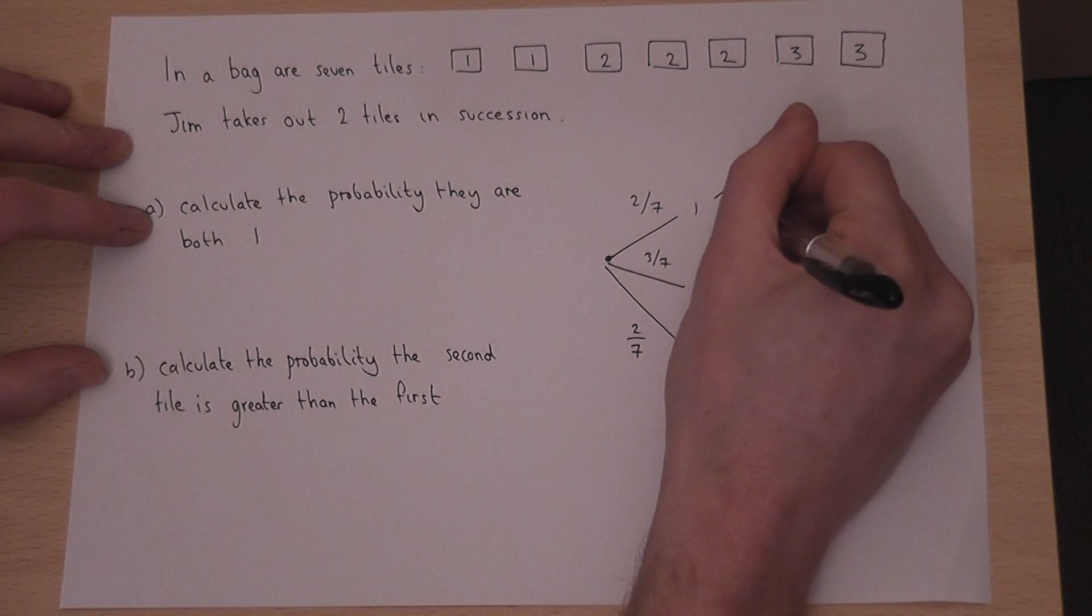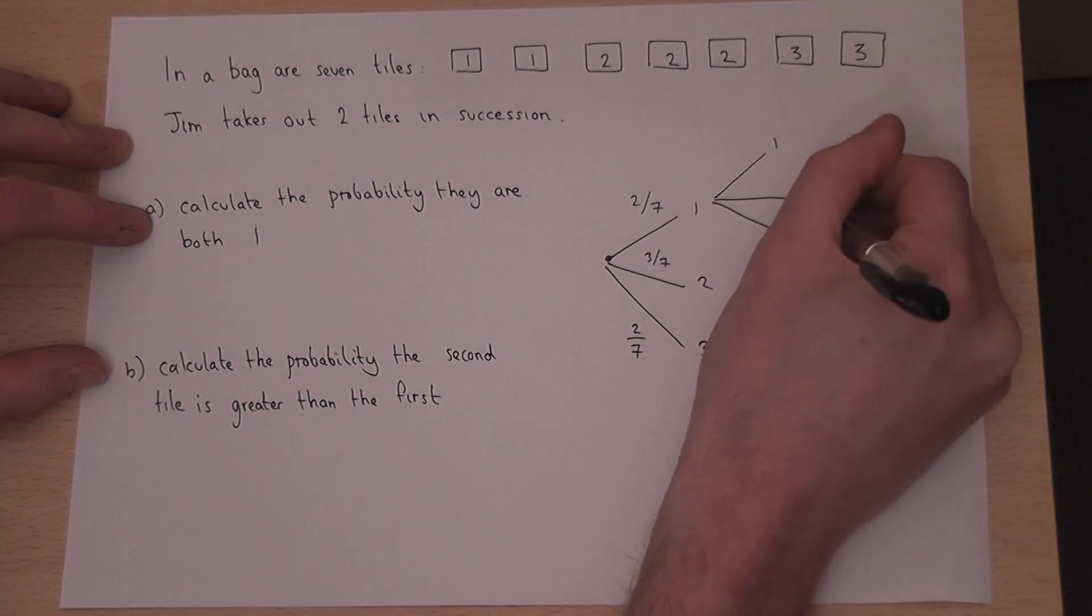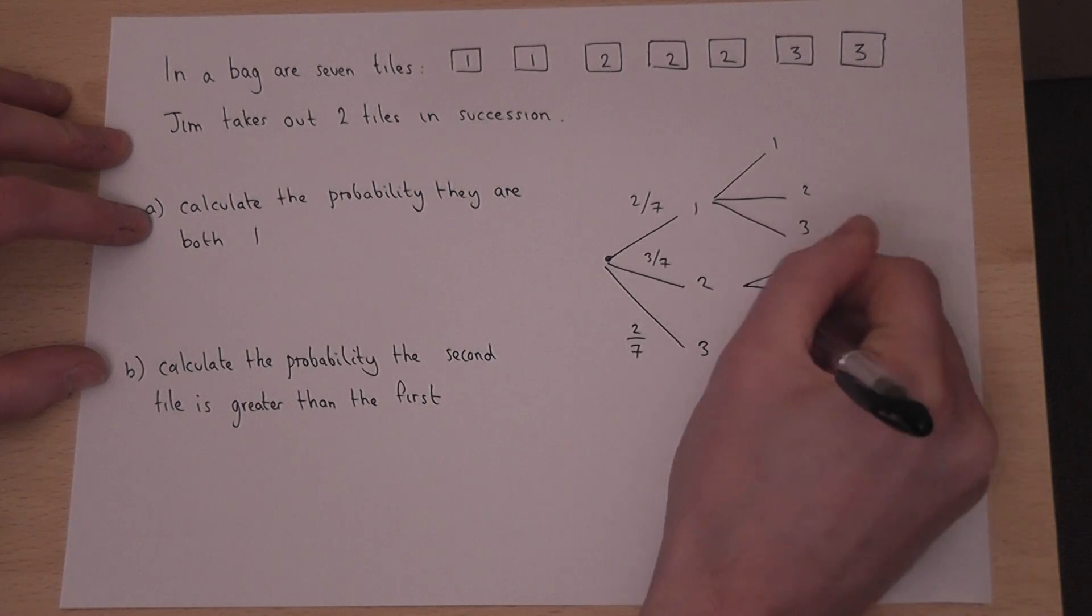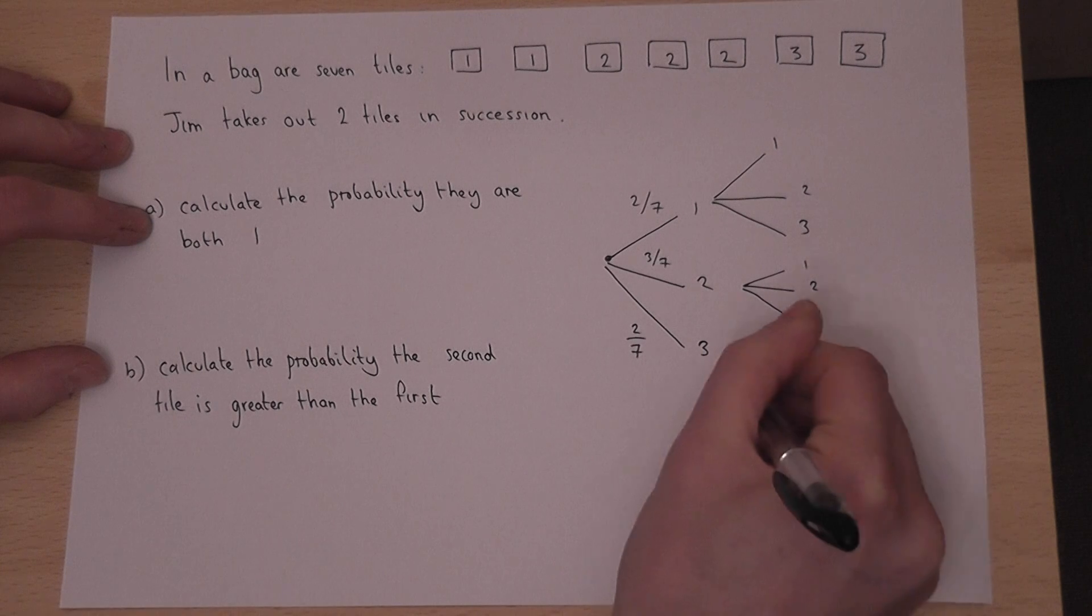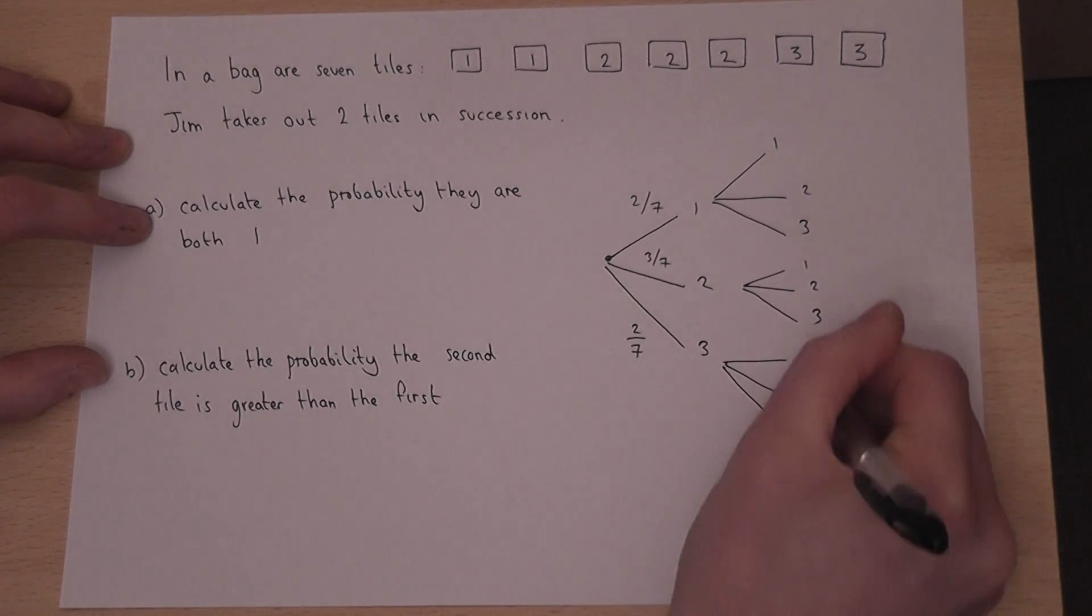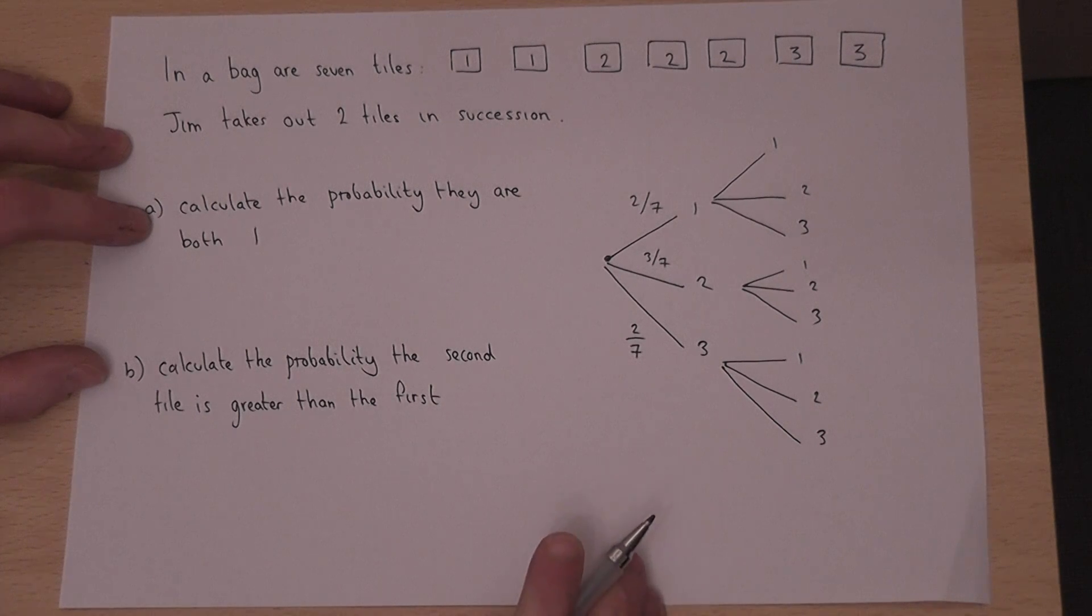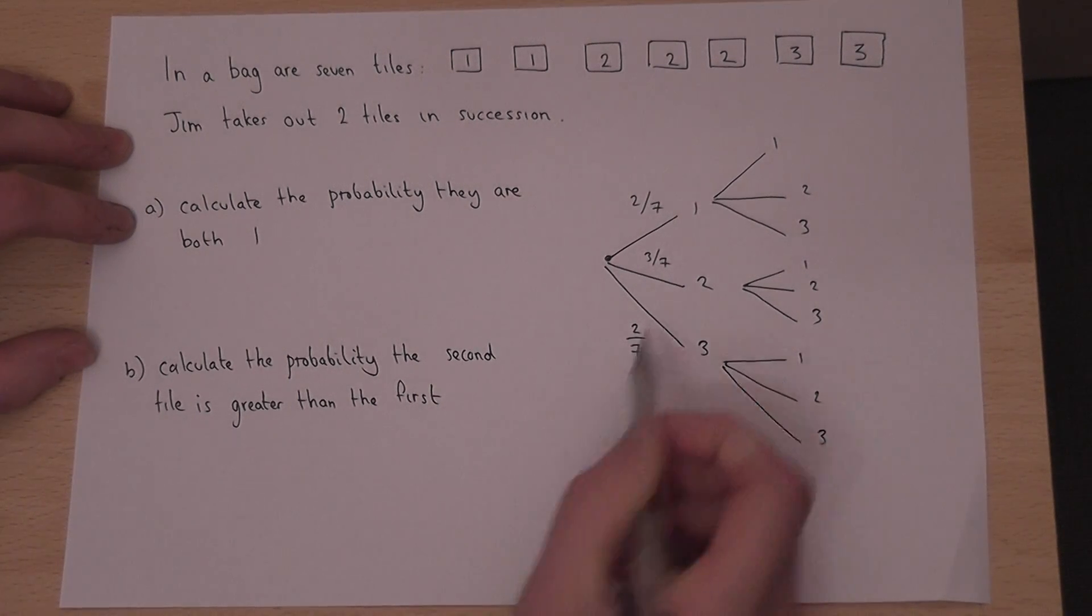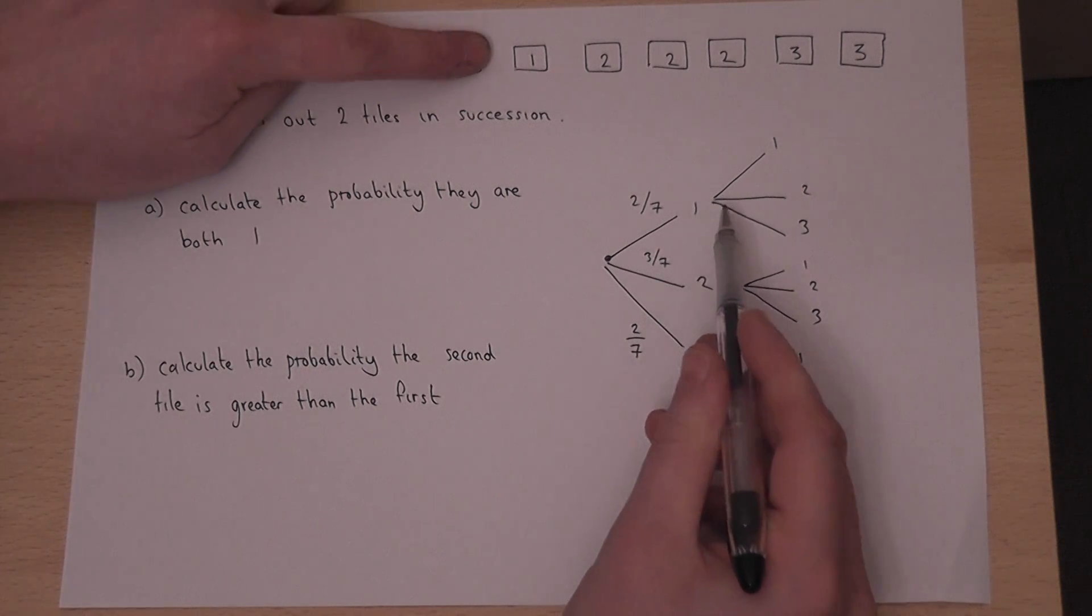He then goes in for a second time and of course the process is repeated. A tree diagram just lists concisely all the possible options. However, these events are dependent because if he pulls a one out, there'll be one less one in the bag.